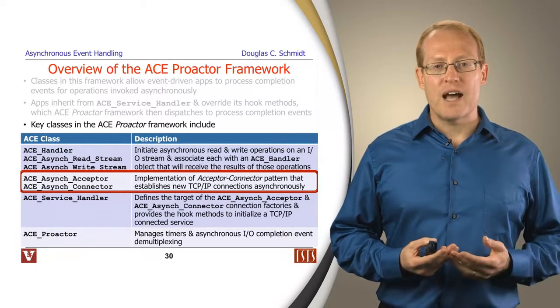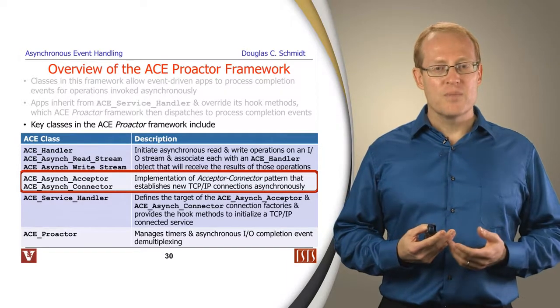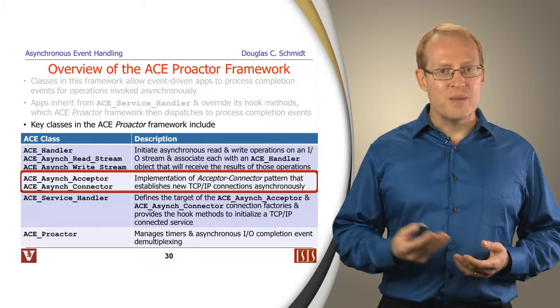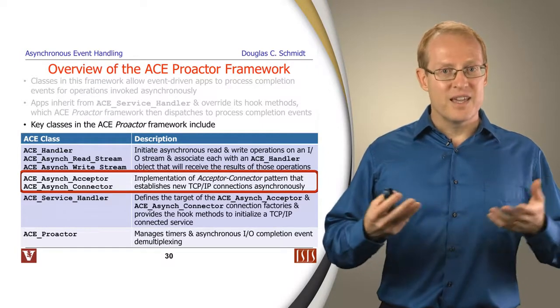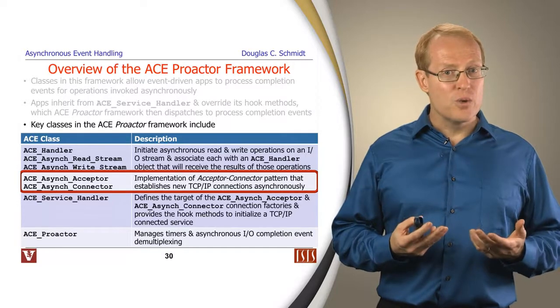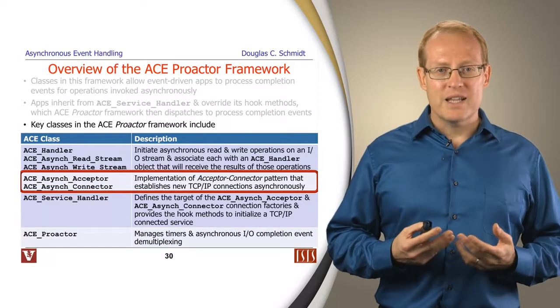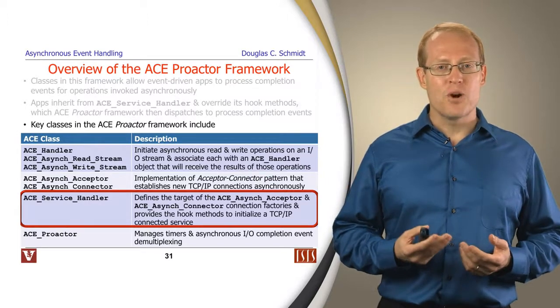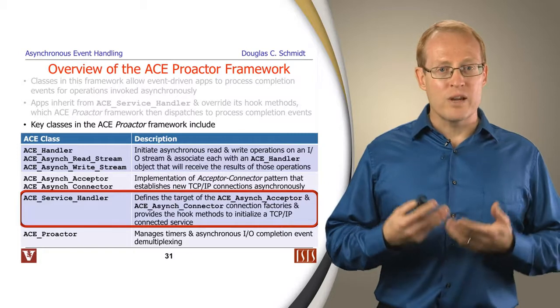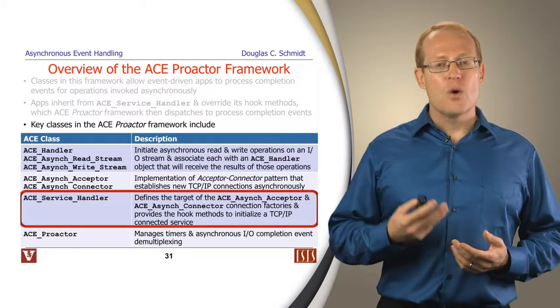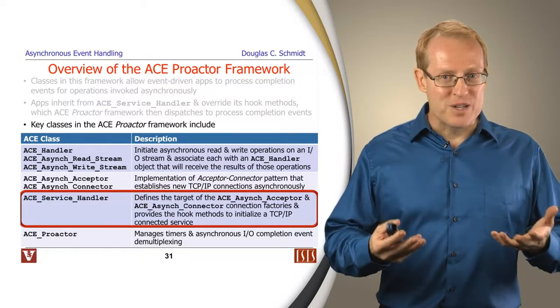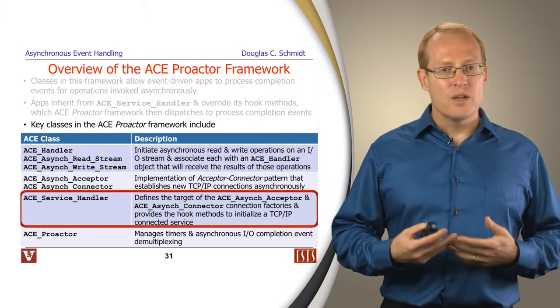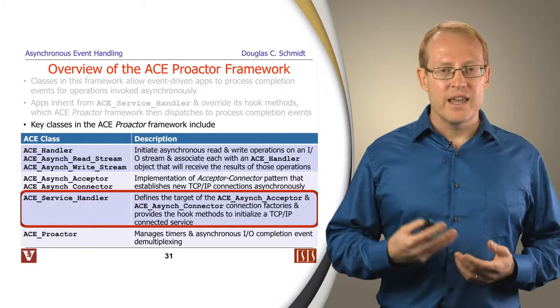There's a set of classes for being able to accept connections or to initiate connections asynchronously. We have the ACE Async Acceptor and ACE Async Connector, used much like the Acceptor Connector framework except now in a more asynchronous way. There's the ACE Service Handler that typically provides the target for the creation of these services when the Acceptors and Connectors asynchronous operations complete. The Service Handlers provide means of doing TCP IP processing in a networked environment.